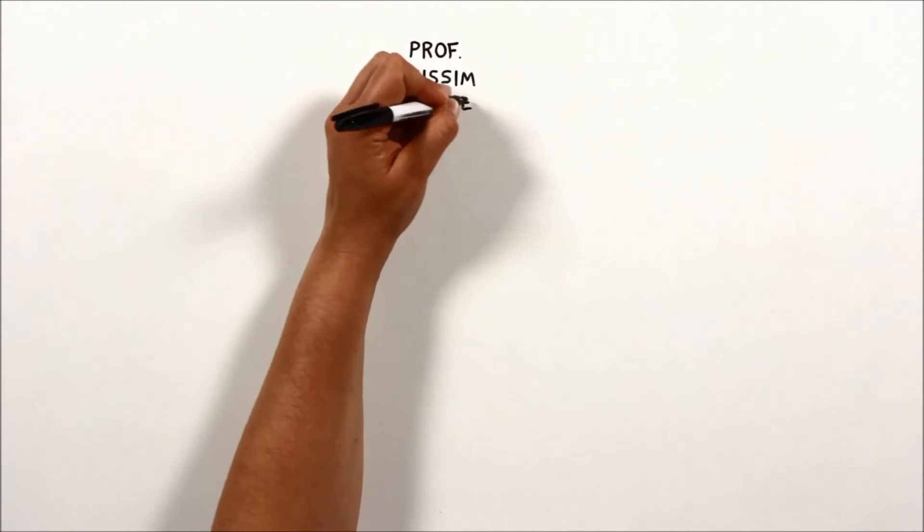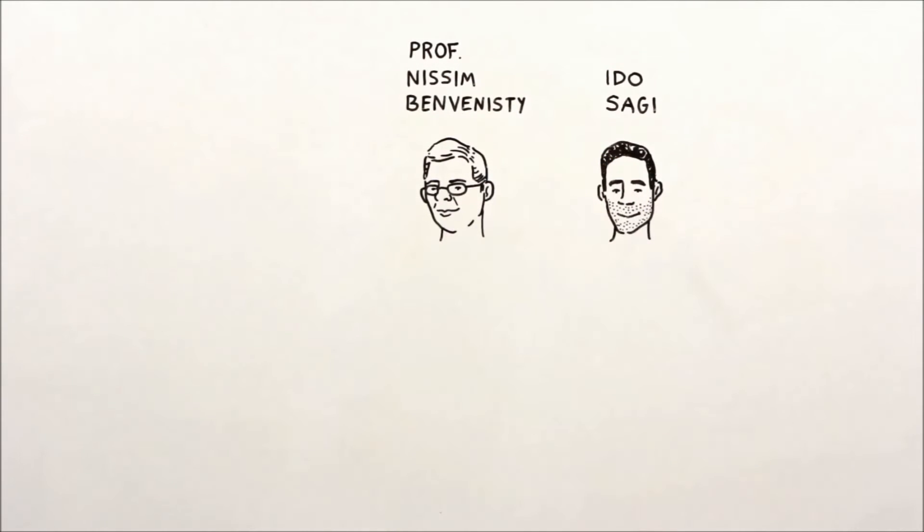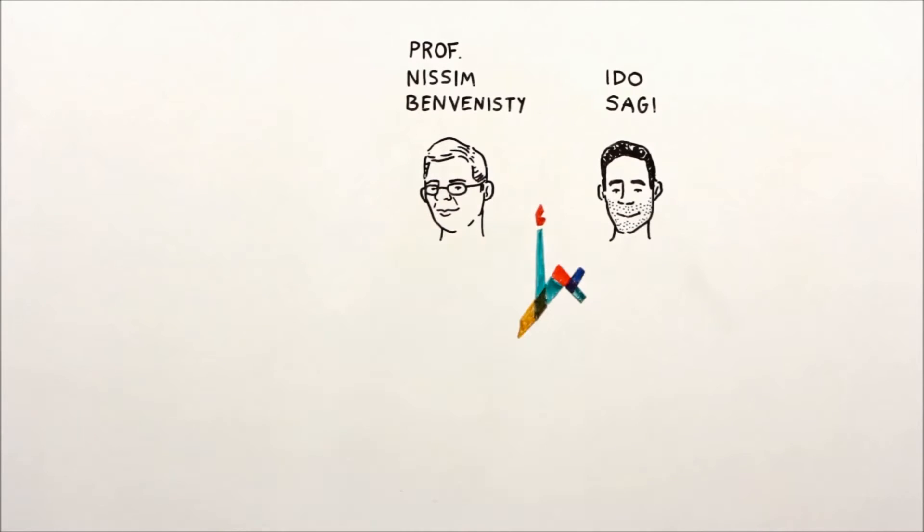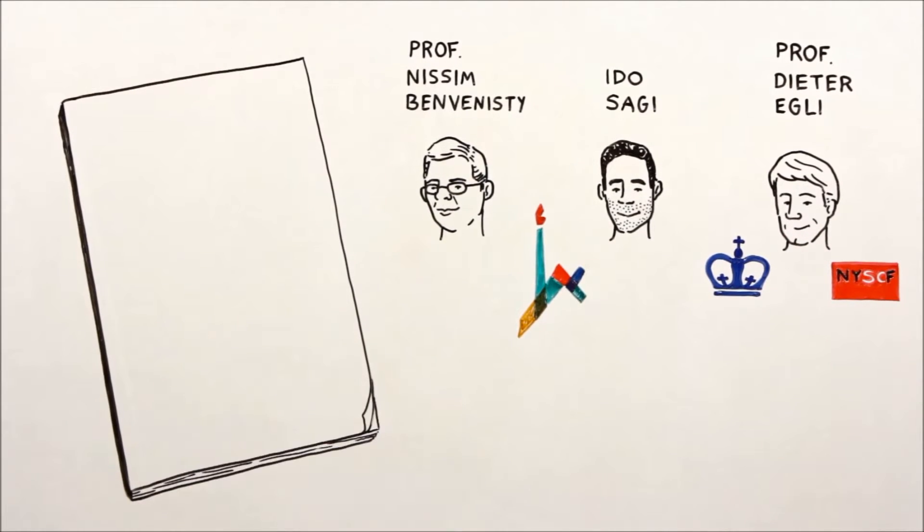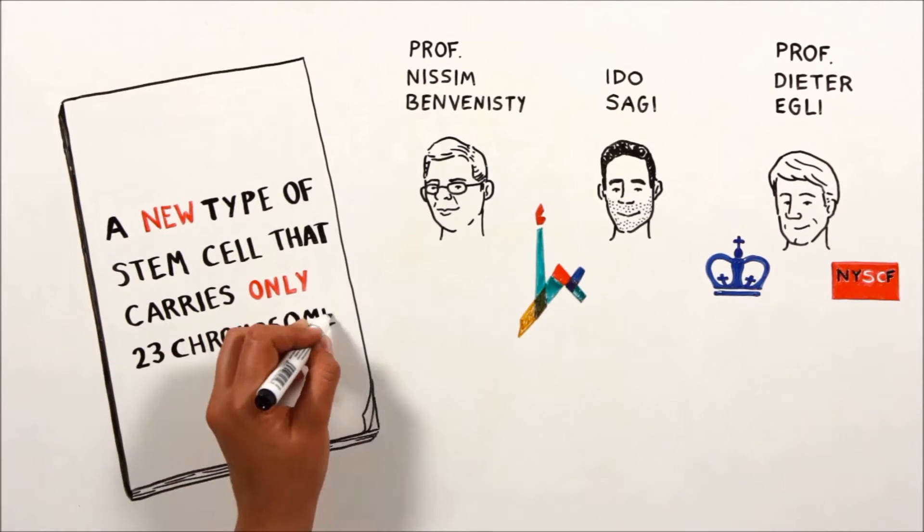Professor Nisin Benvenisti and Ido Segui from the Azriela Center for Stem Cells and Genetic Research at the Hebrew University of Jerusalem and Professor Dieter Egli from Columbia University and the New York Stem Cell Foundation succeeded in generating a new type of stem cell that carries only 23 chromosomes.